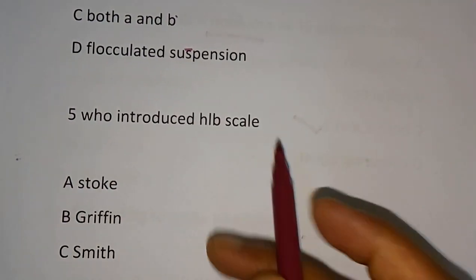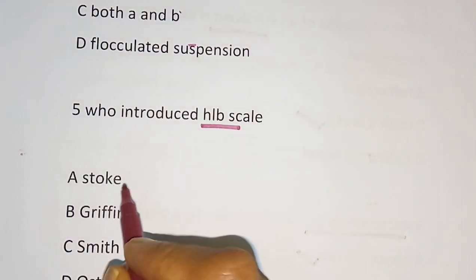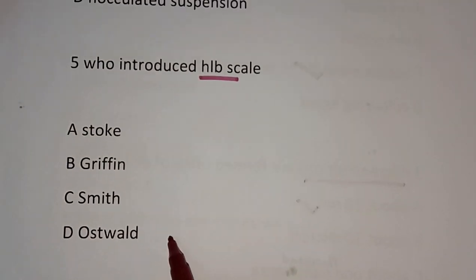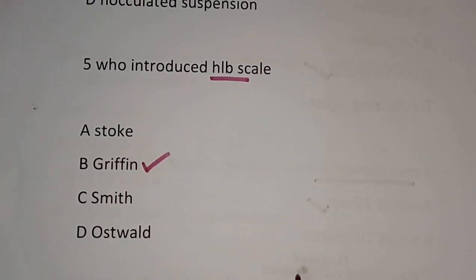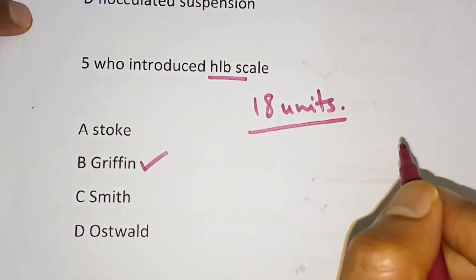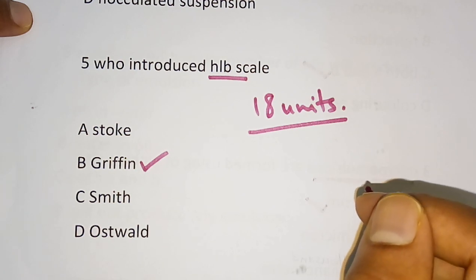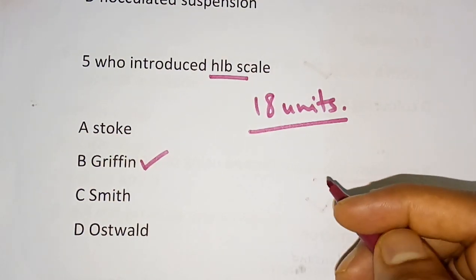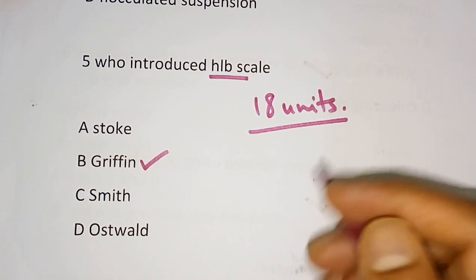Question number 5: Who introduced the HLB scale? HLB stands for Hydrophilic Lipophilic Balance. Options are Stock, Griffin, Smith, Oswald. The correct answer is Griffin. The HLB scale is divided into 18 units. A lower HLB value indicates lipophilic properties, while a higher HLB value indicates hydrophilic properties.